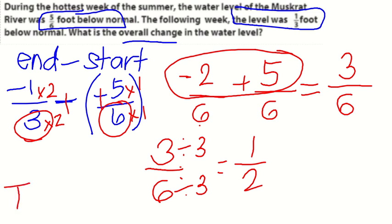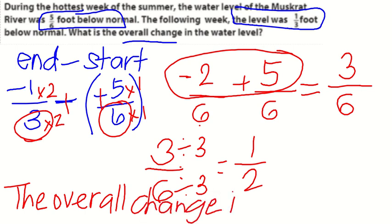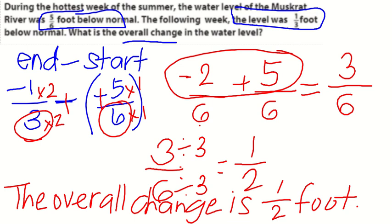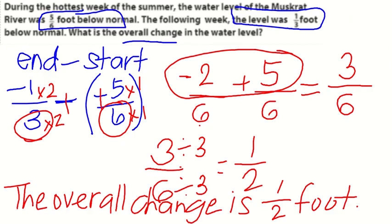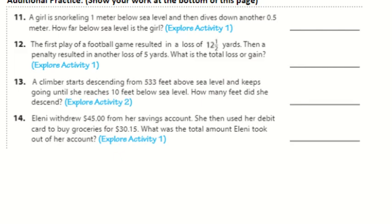So if we answer the question, what is the overall change? Write it out. The overall change is 1/2 foot. There's a lot to remember in that problem. Setting up the difference to find the difference between two points, end minus start. Making sure you use common denominators and then following your rules for adding integers. Let's go back.